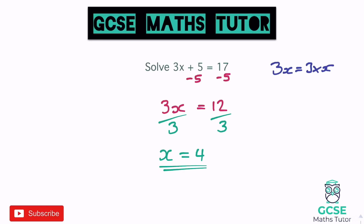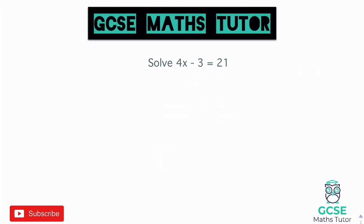Our final answer is x equals 4. What's nice about this topic is you can always substitute it back: 3 times 4 is 12, add 5 is 17 — it works. Let's have a look at another question.